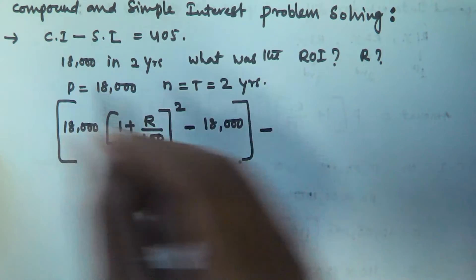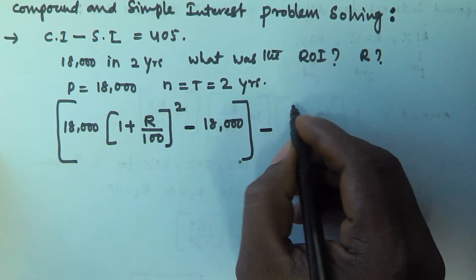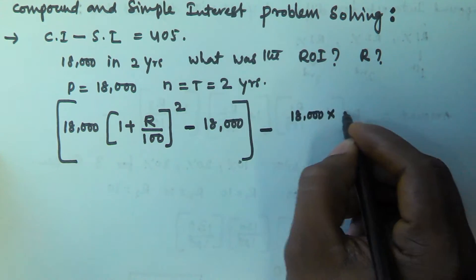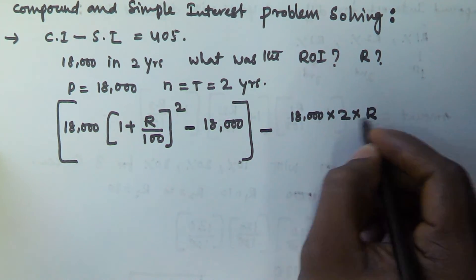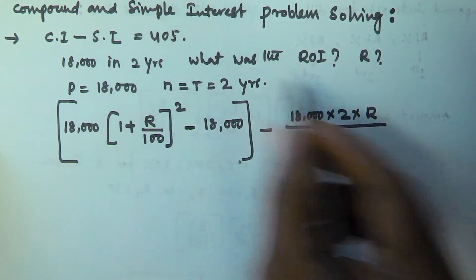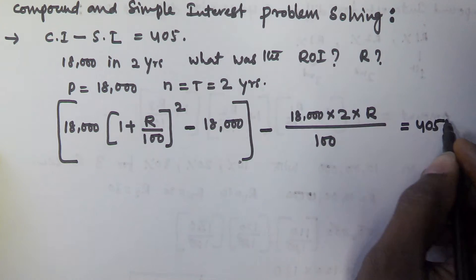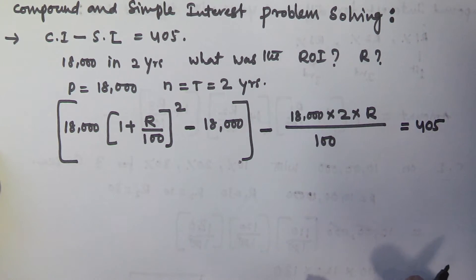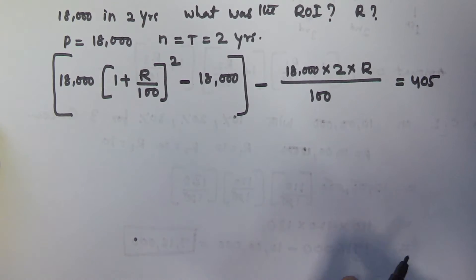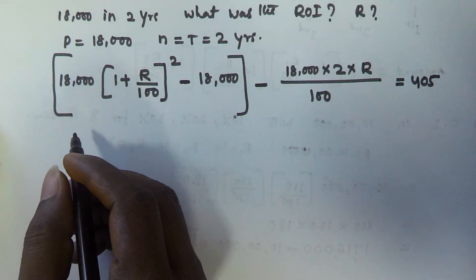Minus the simple interest, which is given by PTR/100. P is 18,000, T is 2 years, and R we have to find, divided by 100. So this entire expression is equivalent to 405.